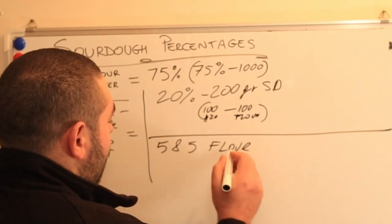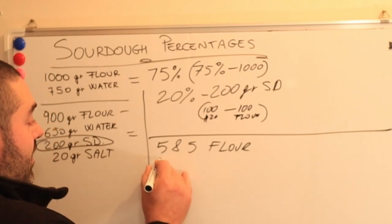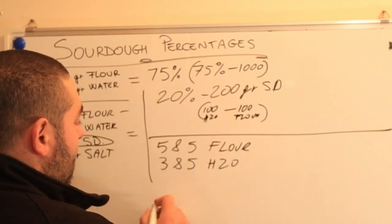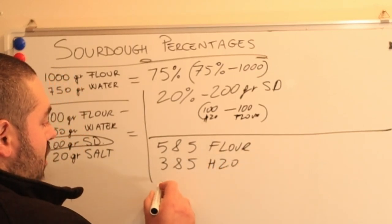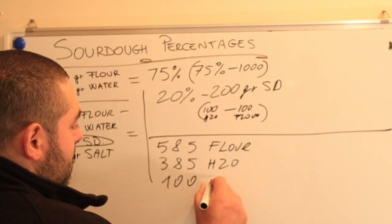And this same recipe has 385 grams of water. Okay? And it's got 100 grams of sourdough culture. Okay? Sourdough.